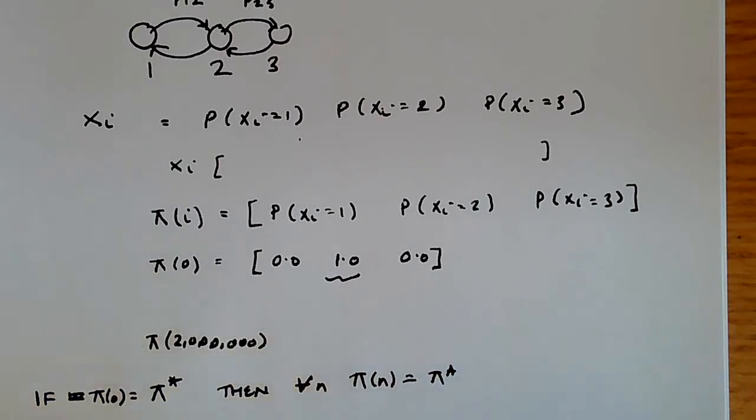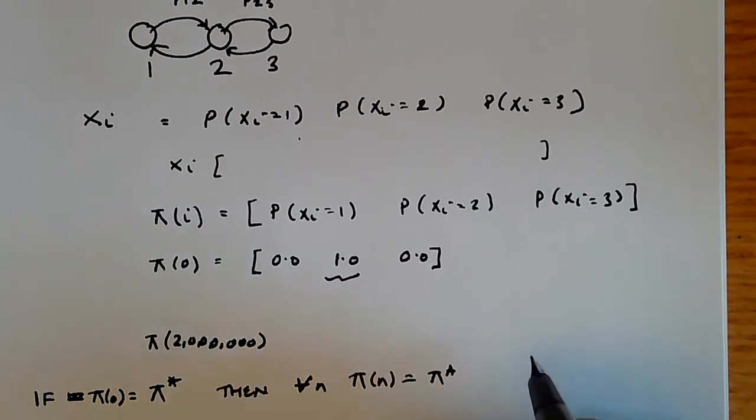π_n equals π*. In other words, this is the definition of a stationary probability distribution.